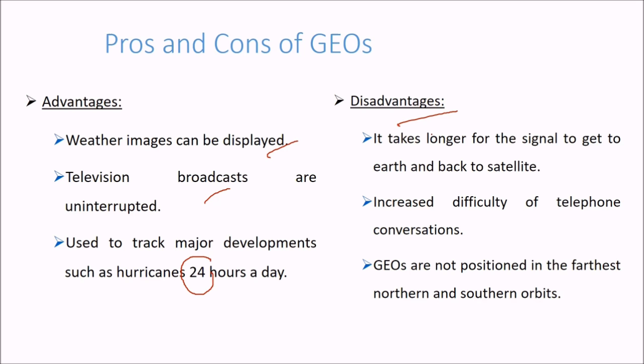What are the disadvantages? Because the distance is 36,000 km, it takes longer for the signal to get to the earth and back to the satellite, so there is a delay and increased difficulty in telephone conversations. GEOs are not positioned in the farthest northern and southern orbits, so polar coverage is not there.